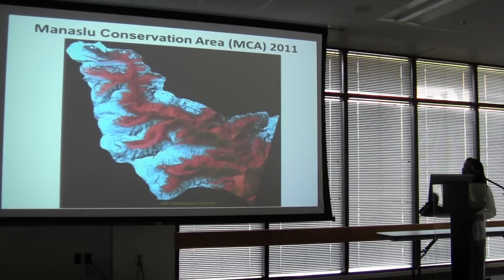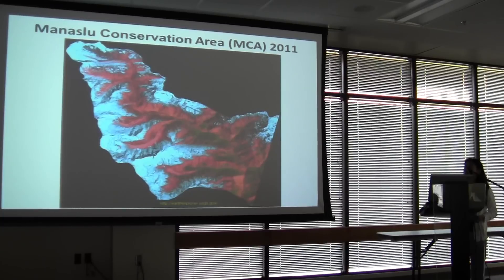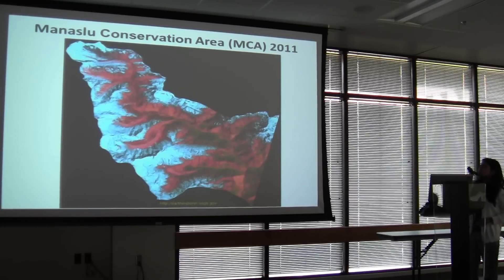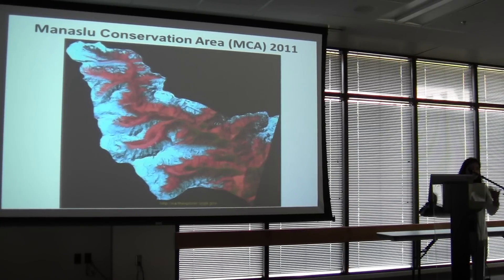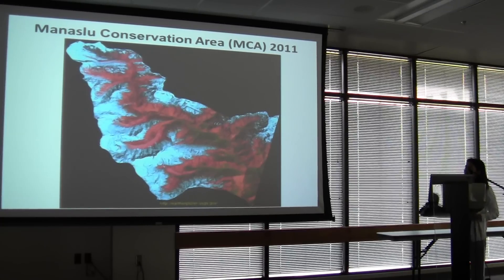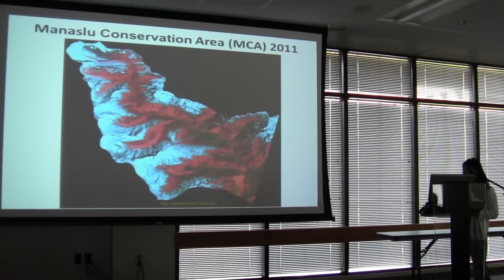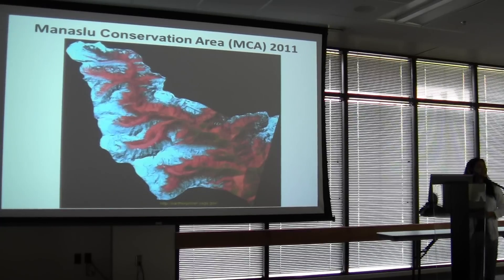This is an April 2011 satellite image of a monastery conservation area. The green here represents vegetation — not necessarily forest, but shrubs, herbs, grasses and such. These areas are decreasing yearly, and you can see they are very patchily distributed and limited mostly to higher elevations.